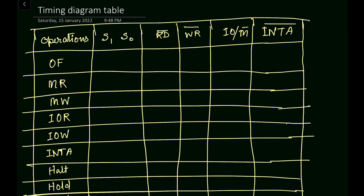Next we have INTA bar — this is also an active low signal and it represents interrupt acknowledgement. Whenever some external device tries to access the address or data bus of the 8085 microprocessor, INTA bar goes low, meaning the interrupt is acknowledged by the microprocessor and the external device can now connect to the address bus or data bus for the transfer operation.